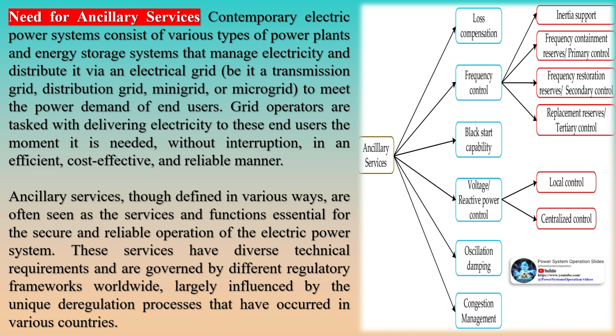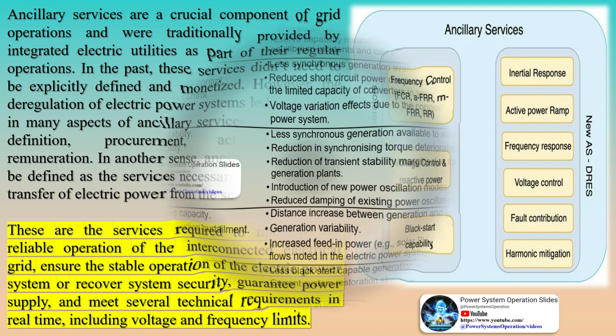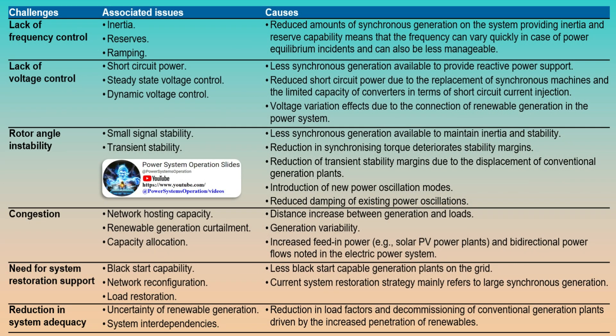The types of ancillary services can include: synchronized regulation, which addresses short-term changes in electrical imbalances that could potentially destabilize the power system; contingency reserves, utilized to react to an unforeseen failure or outage of a system component such as a generator, transmission line, circuit breaker, or other electrical element; black start regulation, which provides electricity for system restoration in the rare event of a full grid power outage; and flexibility reserves, a relatively new concept designed to handle variability and uncertainty over longer timescales than contingency and regulating reserves.